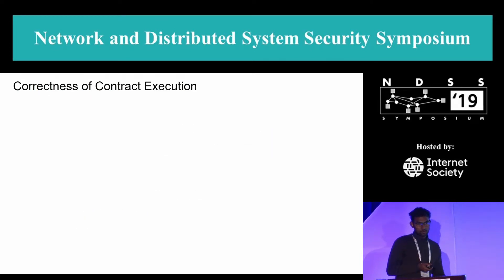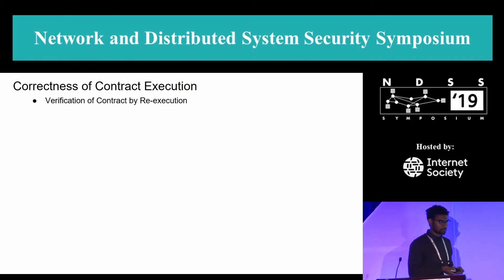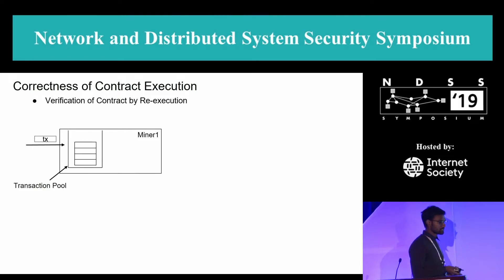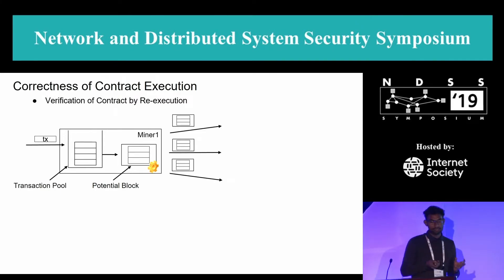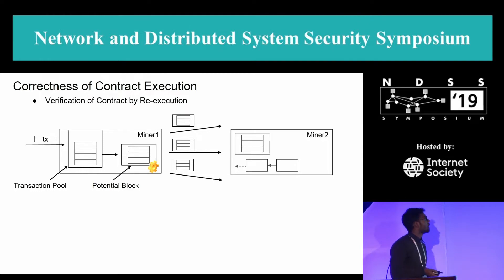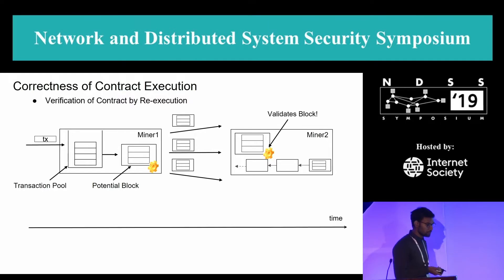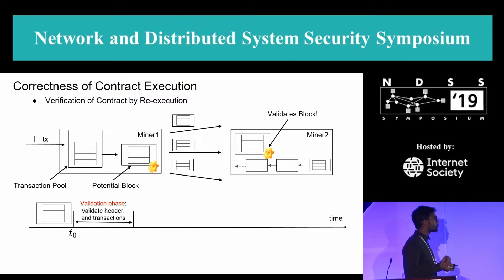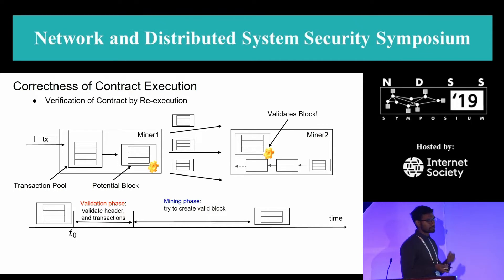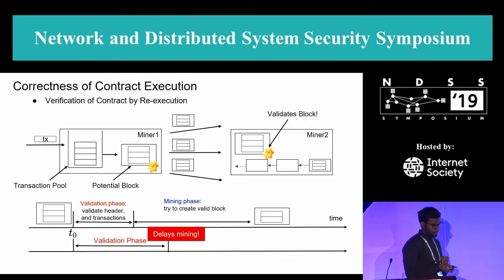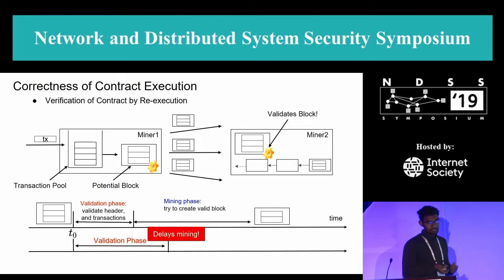Correctness of smart contract execution in blockchains is guaranteed by re-execution. When a miner includes a transaction in a block and successfully mines it, it broadcasts the block to the network. A second miner validates each transaction before including the block in its local chain. If a block contains computationally intensive transactions, the validation phase is large and delays the mining process.